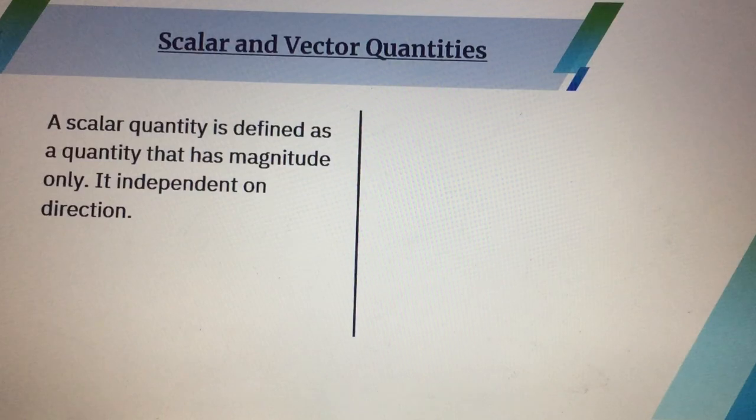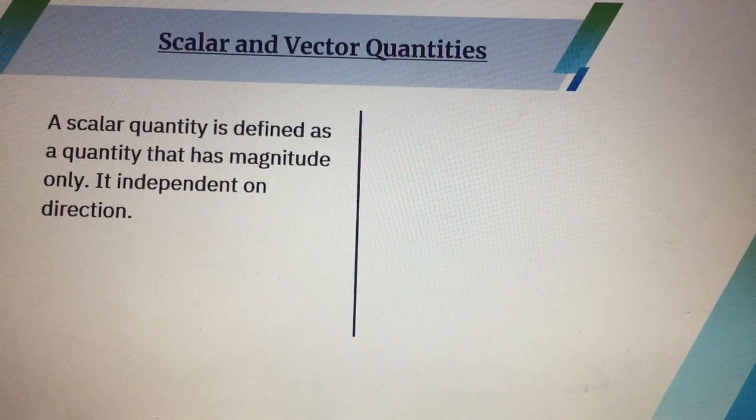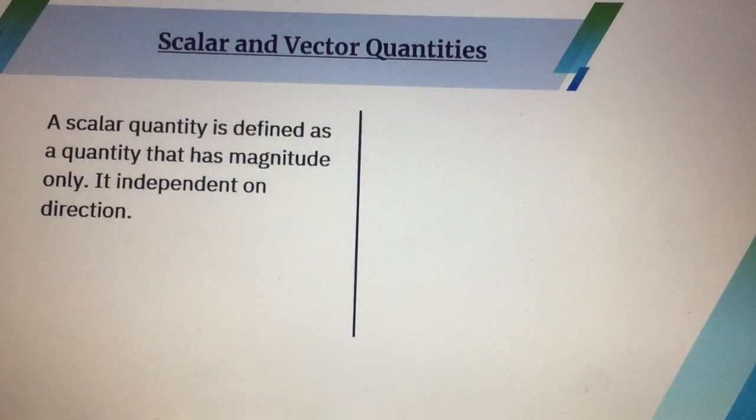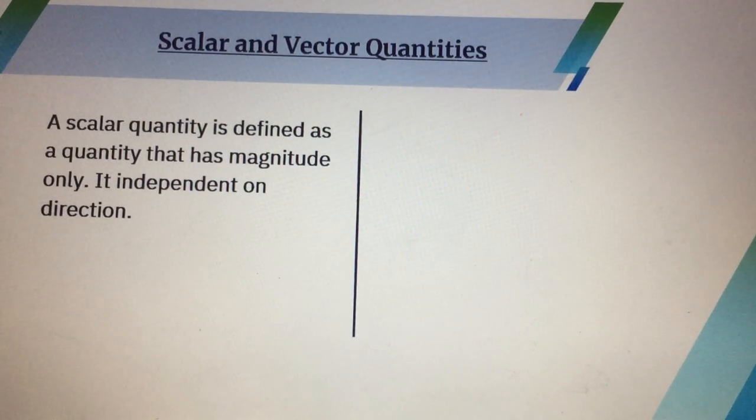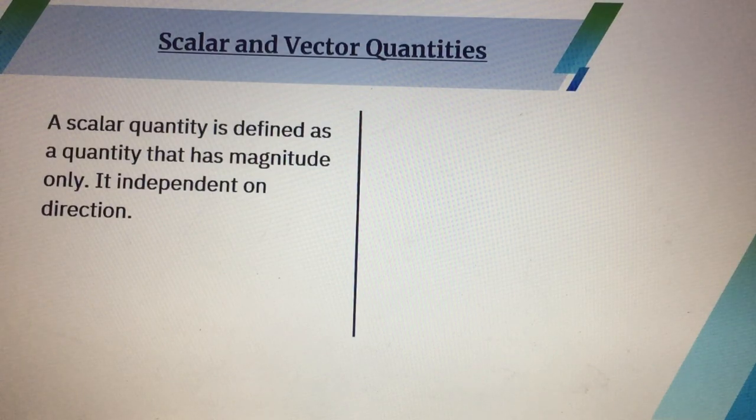Scalar Quantities is defined as a quantity that has magnitude only. It is independent of direction. It means that when we define Scalar Quantities, we don't need to mention direction. So Scalar Quantities consist of only magnitude.